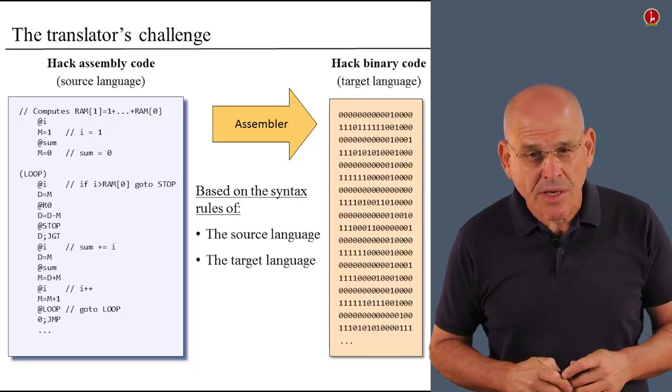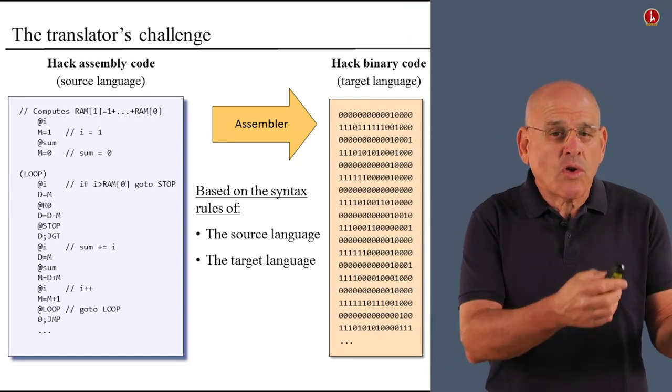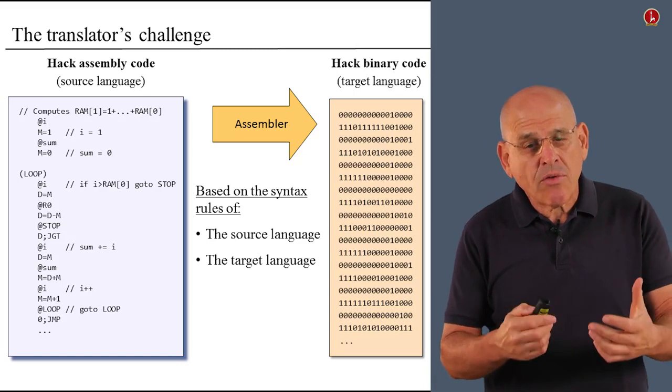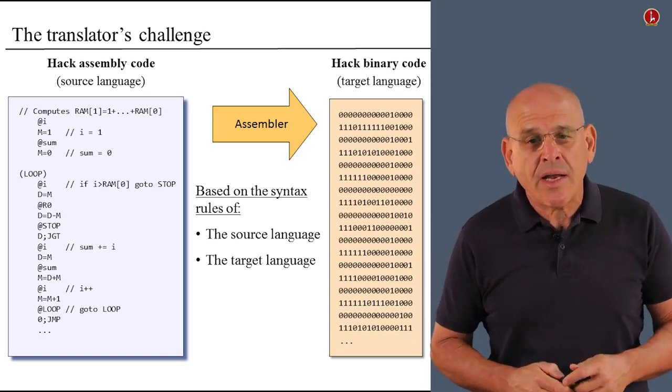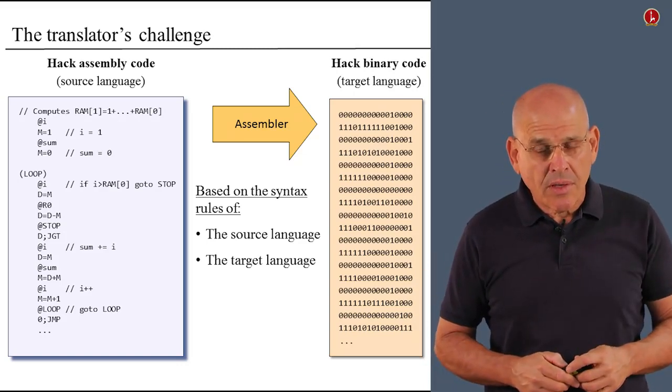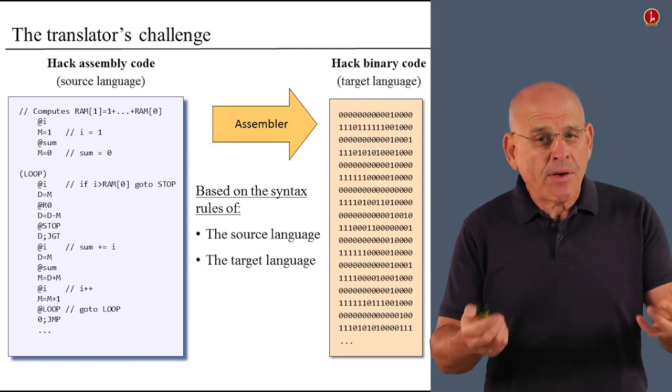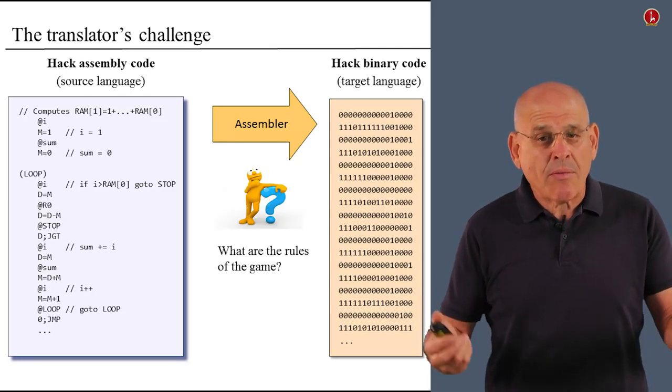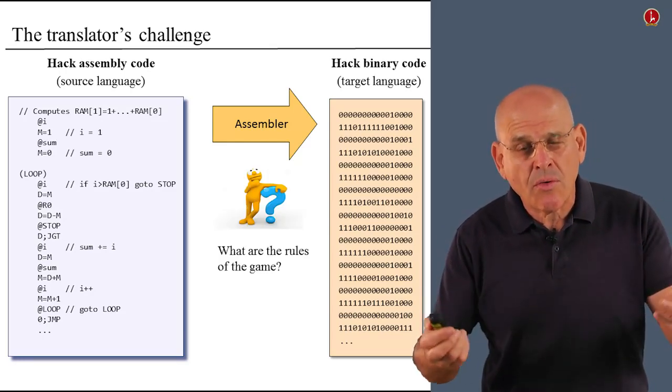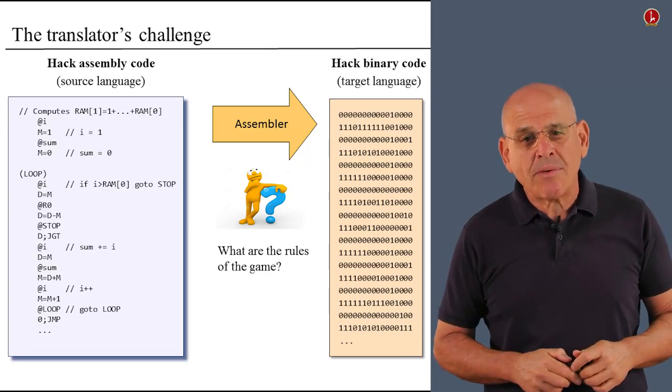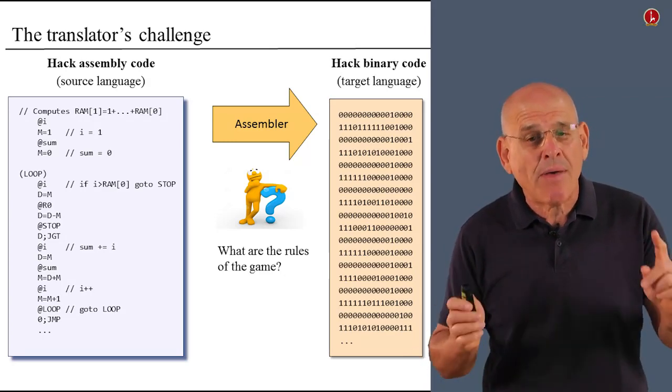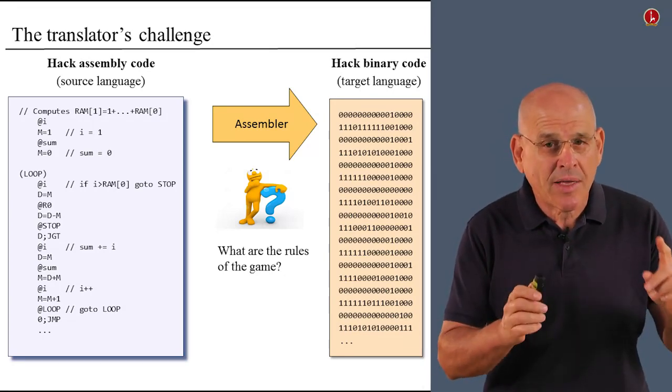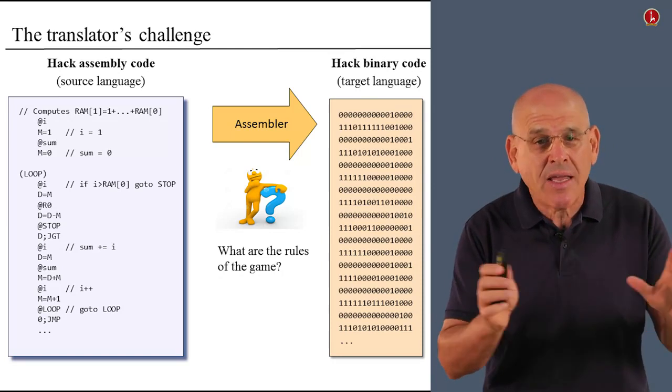Here is the overall picture in a nutshell. We are given a source program written in symbolic hack language, and we have to translate it into an equivalent program written in binary code. So if you were the person who is supposed to develop such an assembler, how would you go about it? What is the knowledge that you have to know in order to develop such a general purpose translator? Bear in mind, we have to be able to translate any program written in hack symbolic code, not just a subset of programs, but any given program.